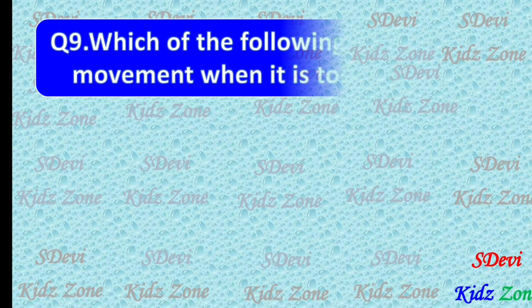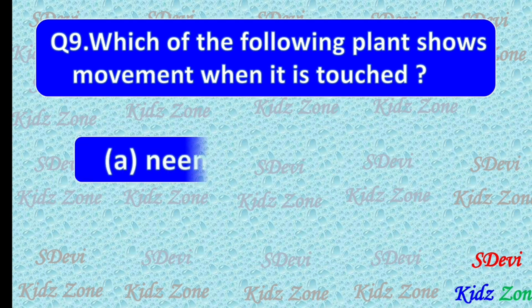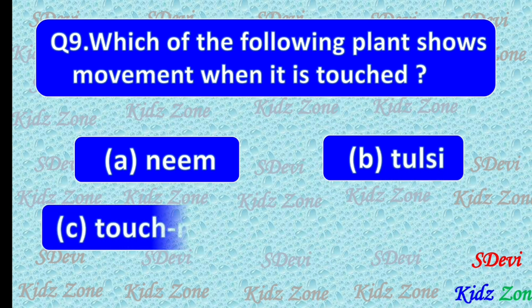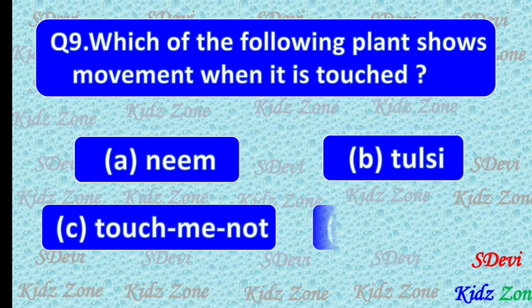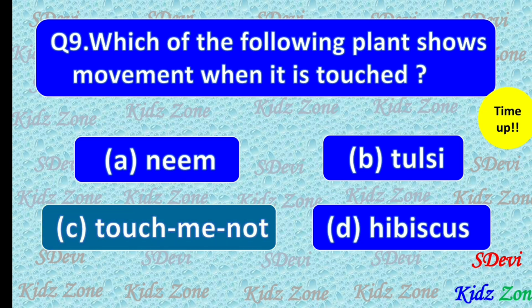Question number 9. Which of the following plants shows movement when it is touched? A. Neem. B. Tulsi. C. Touch me not. D. Hibiscus. The correct answer is C. Touch me not.